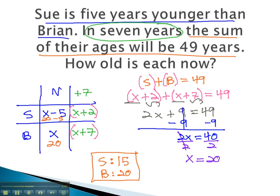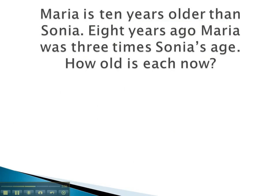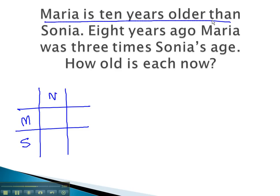Let's consider another example where we can build a table and an equation to answer the age problem. In this problem, we have Maria and Sonia. What we know about their age right now is that Maria is 10 years older than Sonia. This tells us nothing about Sonia, so she is our variable. Maria is 10 years older, meaning we have to add 10 to x.